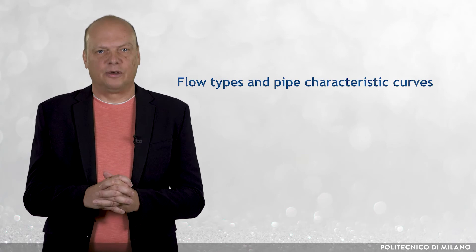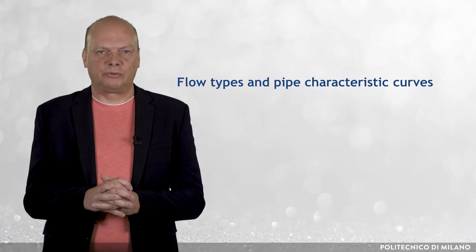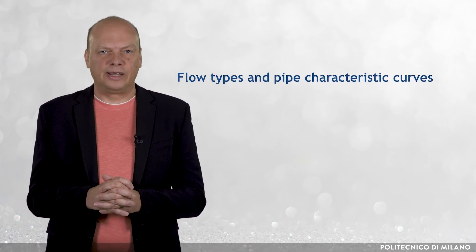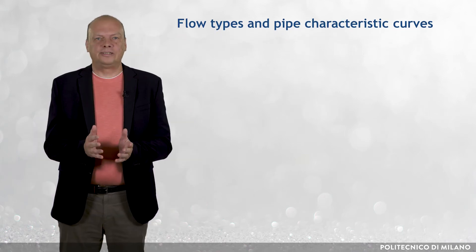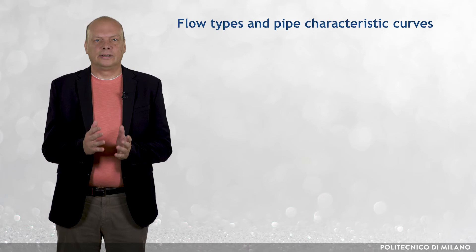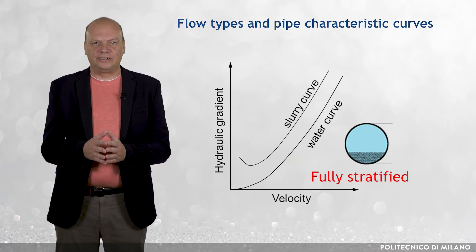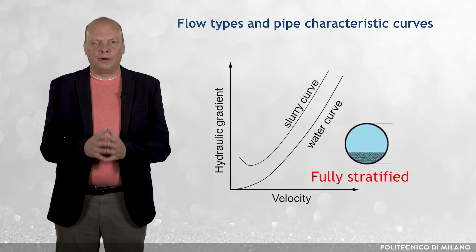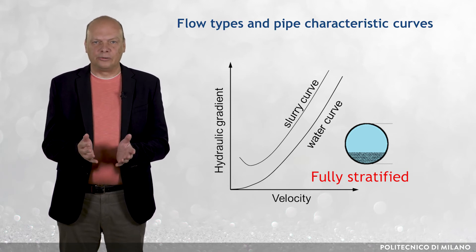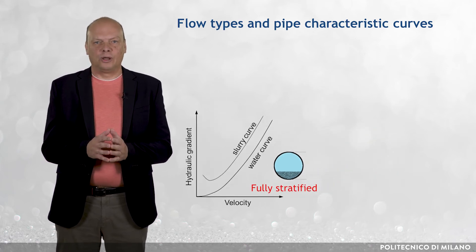Different types of settling slurries exhibit different shapes of pipe characteristic curves within the range of flow velocities of practical interest. There are three basic types of settling slurry flow. At one extreme are large, rapidly settling particles, whose submerged weight cannot be carried by fluid support mechanisms and must be transferred to the pipe wall by intergranule contacts. When all particles behave in this way, the flow is fully specified.